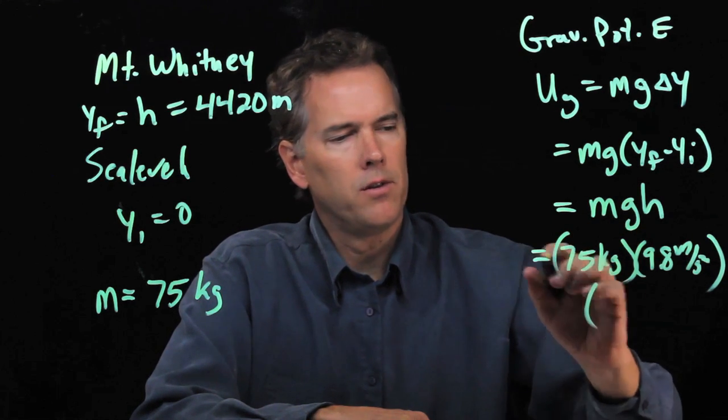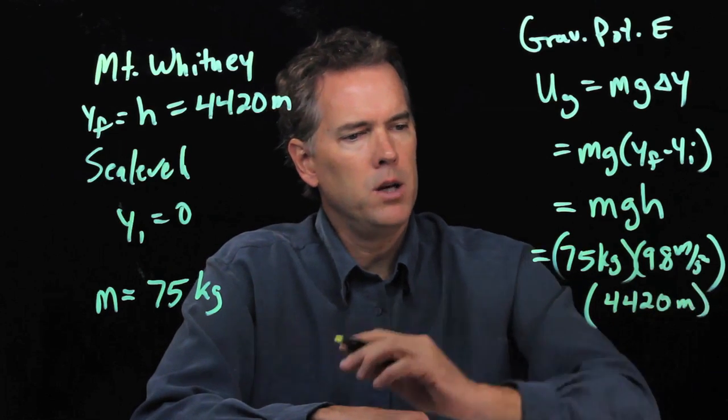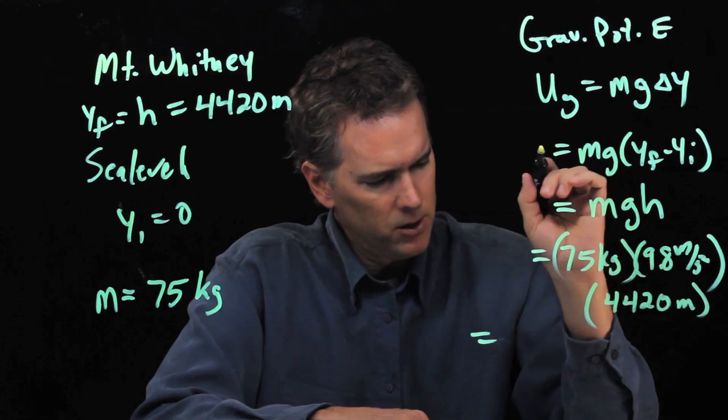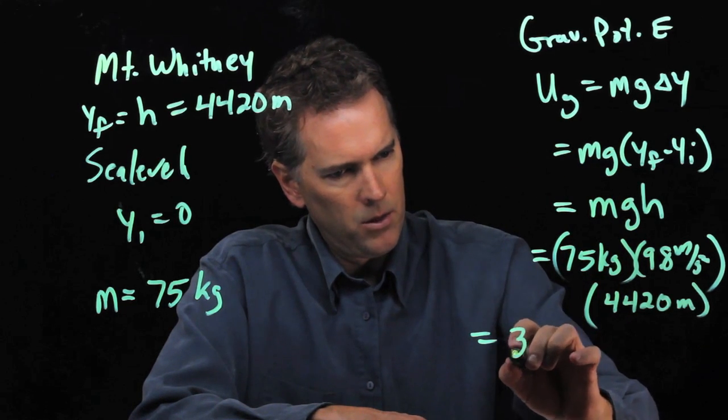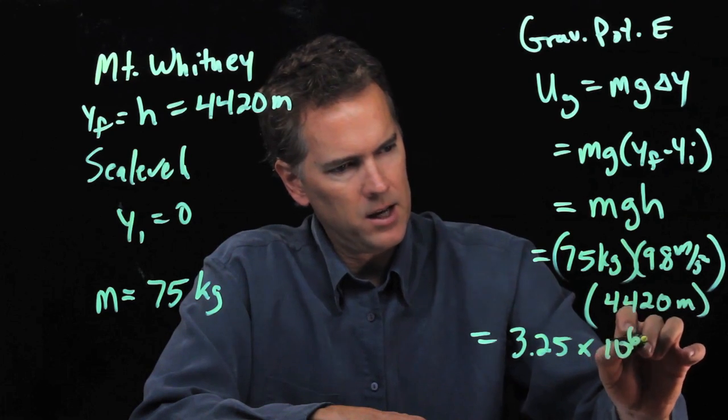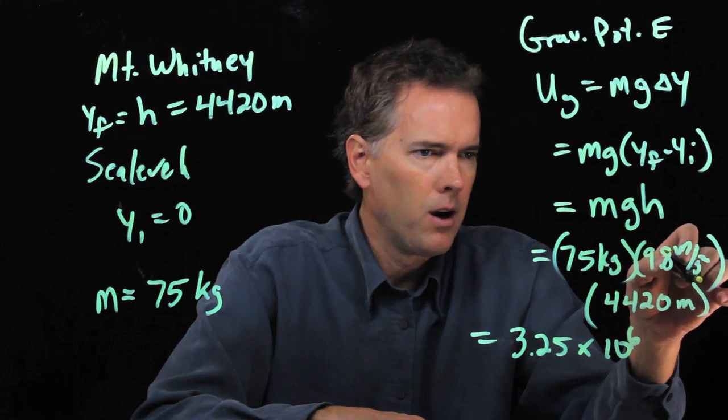We have g which is 9.8 meters per second squared, and then we have h which we said was 4420 meters. And if you punch all those numbers into your calculator, you should get 3.25 times 10 to the 6. And what are the units? Well, it's kilogram meters per second squared.